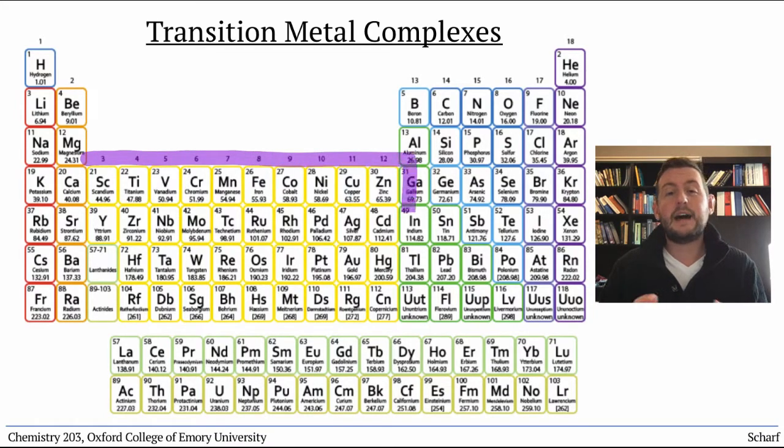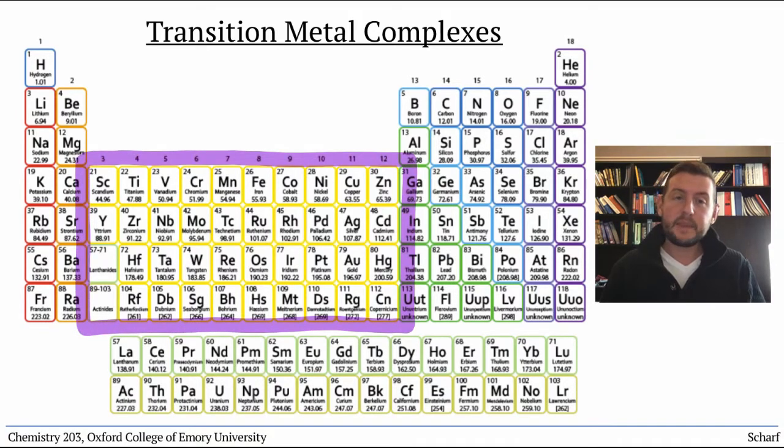Transition metal complexes contain ions of the metals from the d-block, starting with scandium and going down to element 112, copernicium. Though some chemists would argue that zinc, cadmium, mercury, and copernicium really shouldn't count as transition metals.